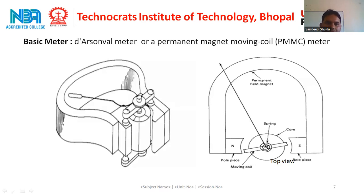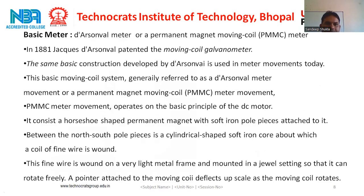We will discuss about the basic concept of the voltmeter and ammeter. This basic concept is known as the D'Arsonval meter or permanent magnet moving coil (PMMC) meter. This is the block diagram and this is the top view. This basic D'Arsonval meter or permanent magnet moving coil meter was patented by D'Arsonval in 1881 and is called the moving coil galvanometer. The same basic construction developed by D'Arsonval is used in meters today and is generally referred to as a D'Arsonval meter movement or a permanent magnet moving coil meter movement.